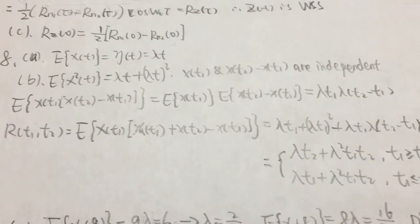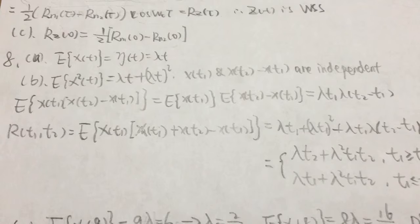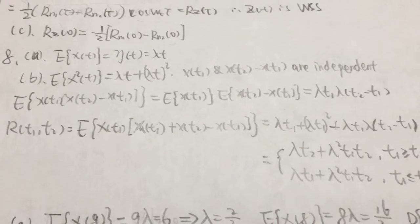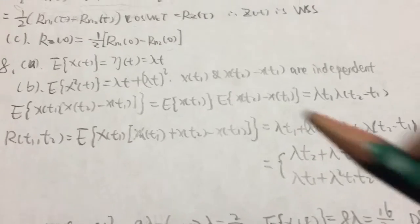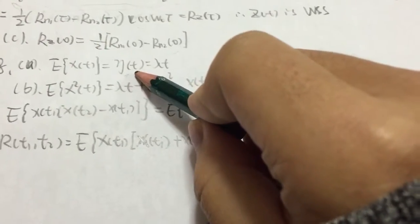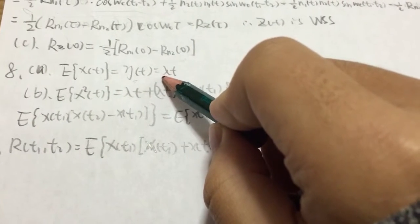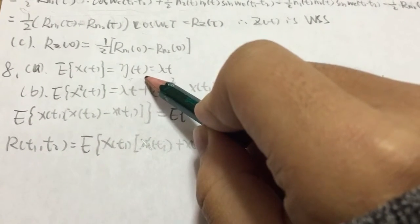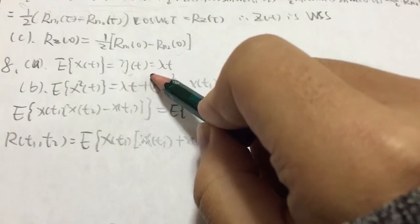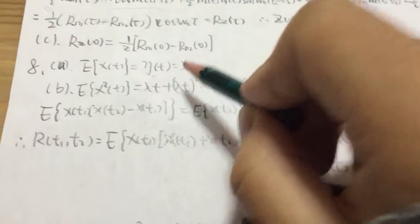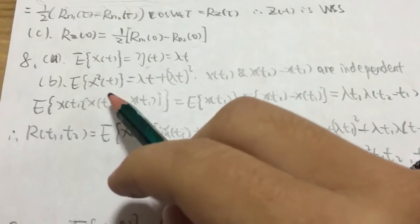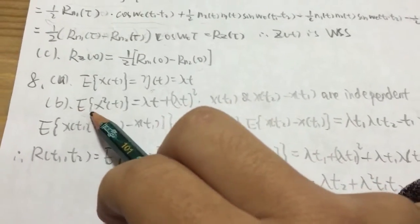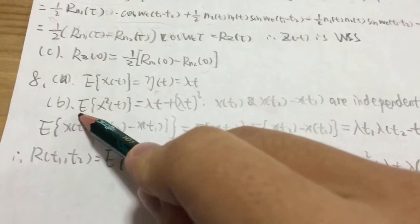The second question is that Xt, given Xt is a Poisson process. In part A we find E[Xt], and E[Xt] is lambda t, just like a Poisson distribution, so it's lambda t. In part B we calculate R, and we first recall that